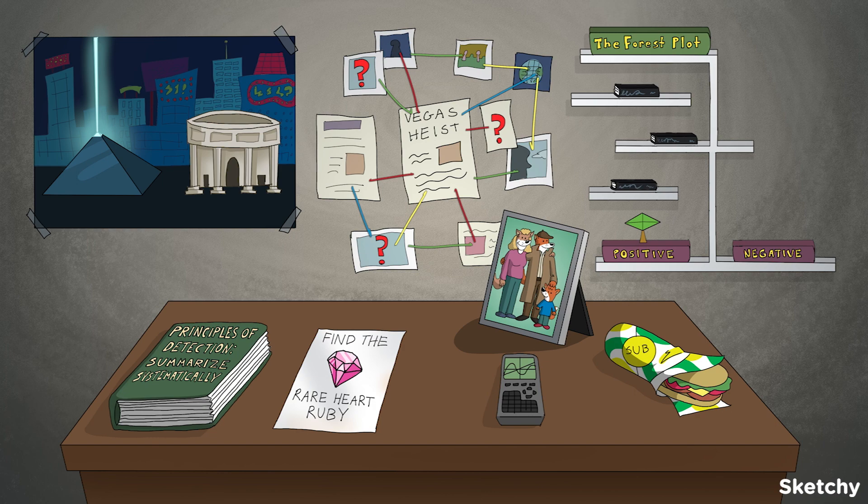By the way, once StatLock recovered the rare heart ruby, he almost immediately dropped it at the bottom of a bottomless mimosa. From MussetSketchy and StatLockFox, consider the case of the forest plot in Rare Heart Ruby open and shut.